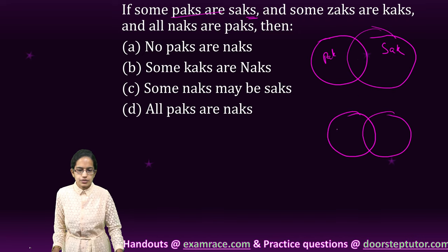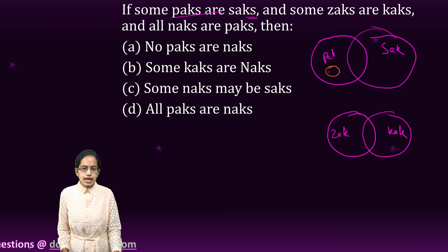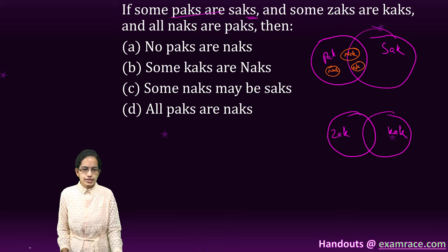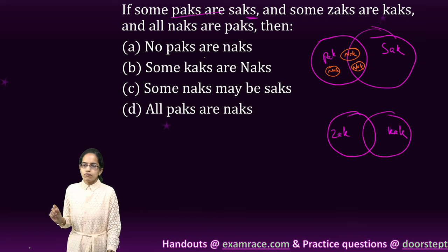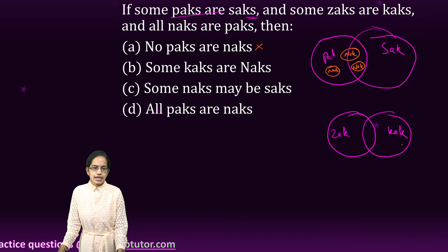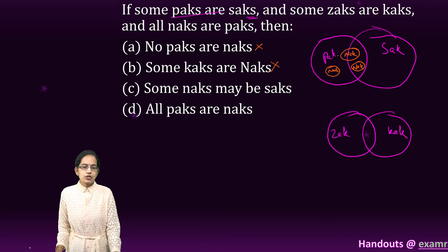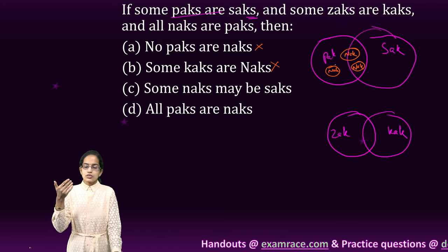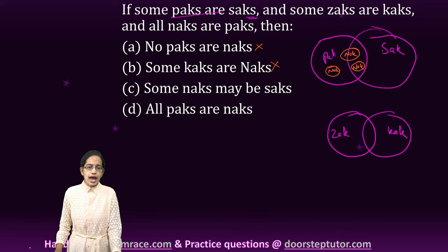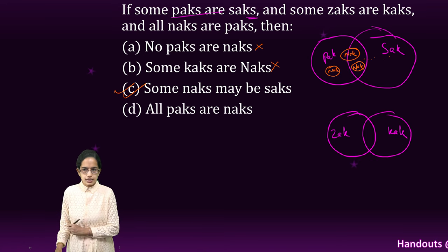When I say all knacks are packs, the knack circle can exist entirely within packs, or intersect with the sac region. The first option — no packs are knacks — is incorrect because all knacks are packs. Some cacs are knacks is impossible since they are disconnected. All packs are knacks is also incorrect. However, some knacks are sacs is possible if knack exists in the intersection, so C is the right option.